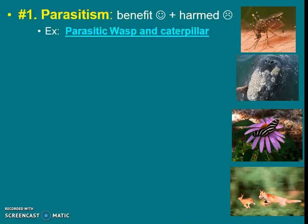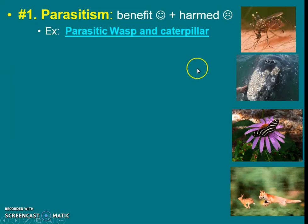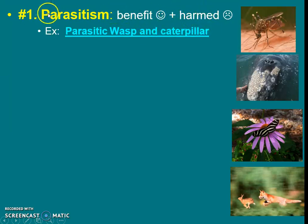The first type is parasitism. For instance, a tick or a mosquito and a human — in those relationships, the mosquito or tick is benefiting, getting nutrients, and it's harming the human. We're going to learn another example in class called the parasitic wasp and caterpillar, where the wasp is really not so nice to the caterpillar. In all these examples, the host that's being harmed does not die, but the parasite is still harming the host.